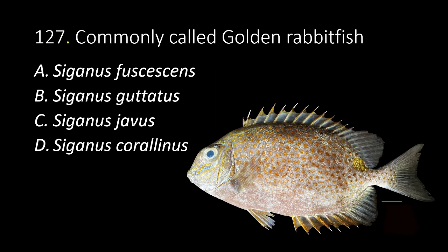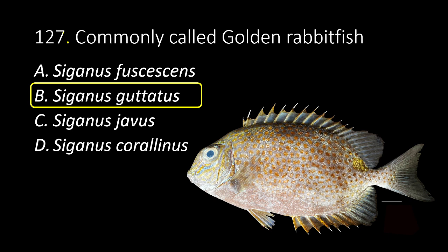127. Commonly called golden rabbit fish. A. Siganus fuscescens. B. Siganus guttatus. C. Siganus javus. D. Siganus corallinus. The answer is B, Siganus guttatus.